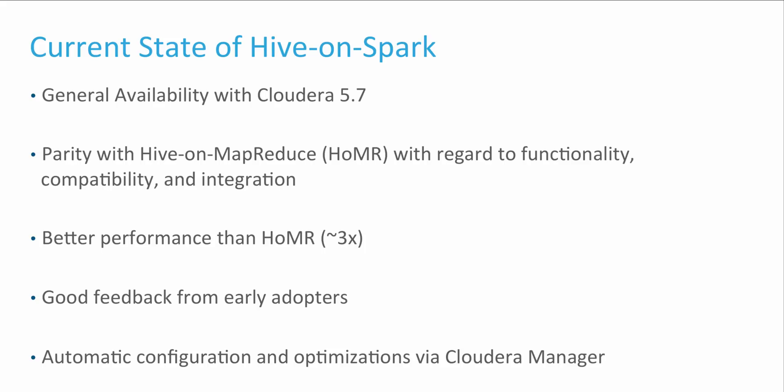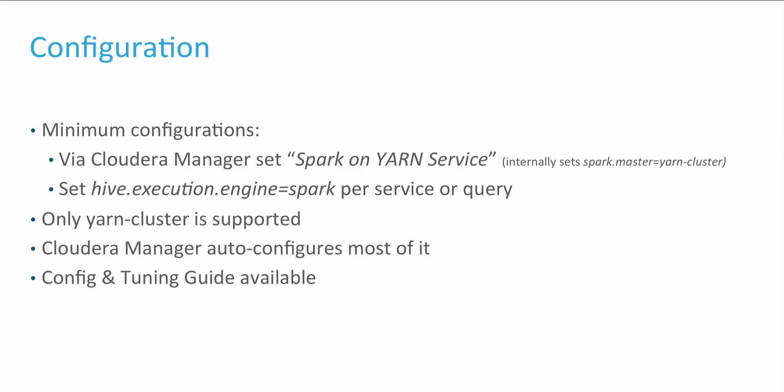Spark exposes a lot of configuration and optimizations. The good news is that most of these are taken care of by Cloudera Manager or Hive on Spark. Hive on Spark requires only two config changes: one, to set up Hive to use Spark on YARN at the CM level, and another to enable Hive queries to run on Spark and not MapReduce engines interchangeably. The second option can be configured at the service level for all queries or can be enabled for each query individually.